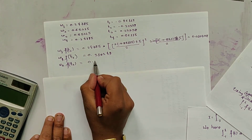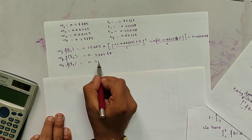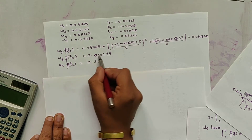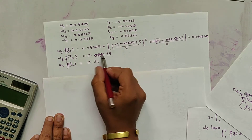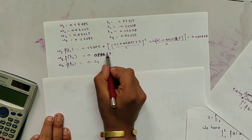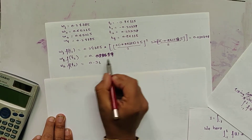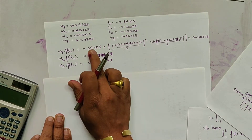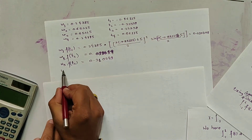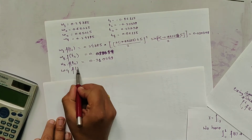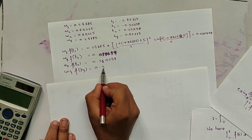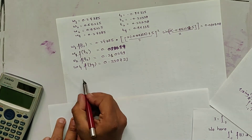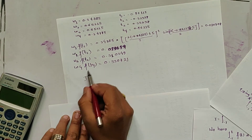Similarly, w2*f(t2) = 0.089684 and w3*f(t3) = 0.302490, obtained by substituting the respective node values into x = (3t+5)/2 and evaluating x^2 * sin(x). Also, w4*f(t4) = 0.330721.